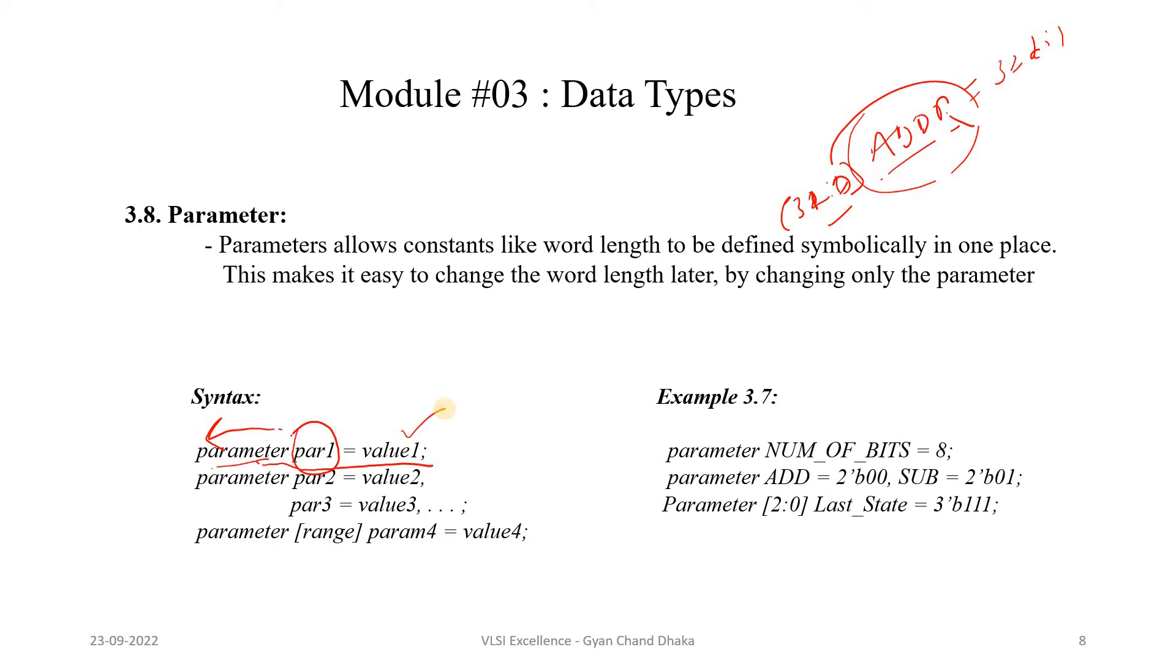If we have to declare multiple parameters, we can use a single parameter keyword and write like this. Here the par2 is the first parameter, its value2, and then using the comma, we can declare parameter3 which has value3. Like this we can declare as many parameters as we want.